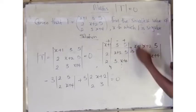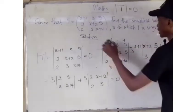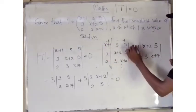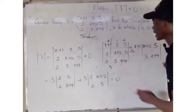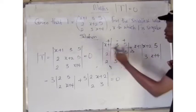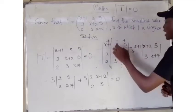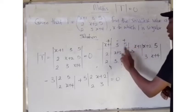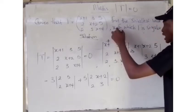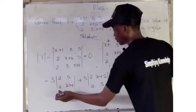We have x plus 1 multiplying its minor matrix: x plus 2, 5, 3, and x plus 4. There is a plus sign attached to this first element. The next element on the second column is 3, and there is a minus sign attached to it. So we have minus 3, and we multiply it with the minor matrix of this element. Closing that row and column, we are left with 2, 5, 2, and x plus 4.